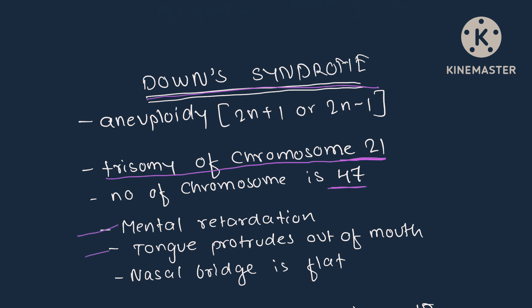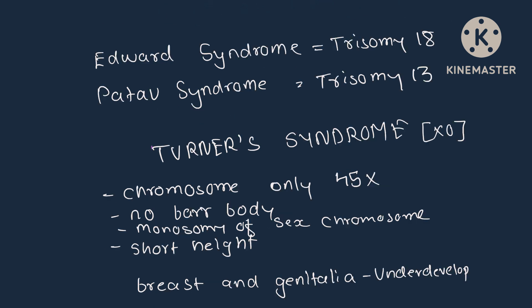Symptoms of Down syndrome include mental retardation, tongue protrudes out of mouth, and flat nasal bridge. Aneuploidy means a 2n+1 or 2n−1 situation. Edward syndrome means trisomy of chromosome number 18, while Patau syndrome means trisomy of chromosome number 13.